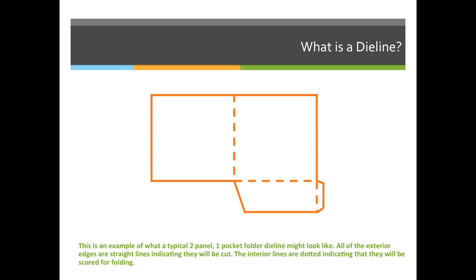So we're looking at a standard two-panel, one-pocket folder. It has two panels, so we're going to take, let's say, an 11 by 17 and fold it in half to create the pocket folder. And there's a pocket that extends on the back panel.